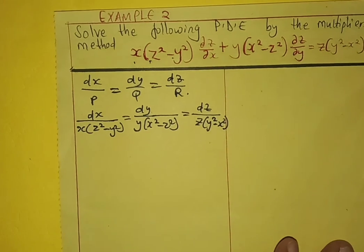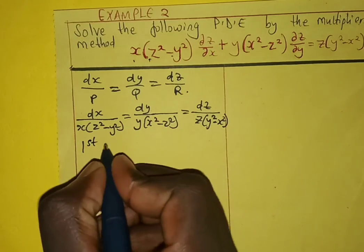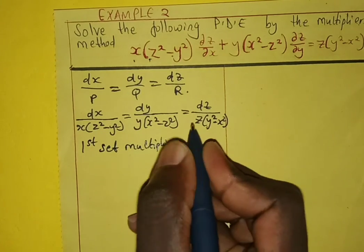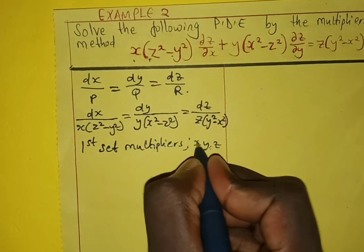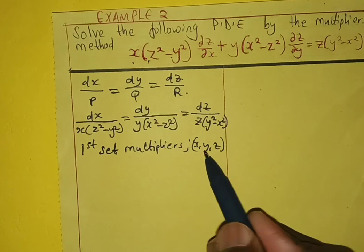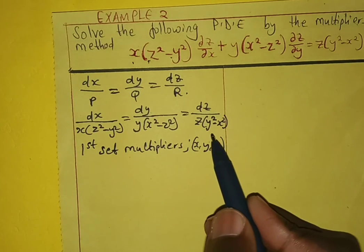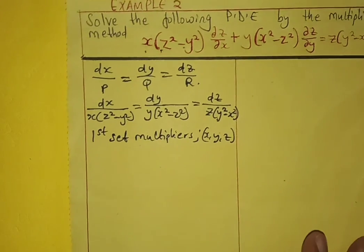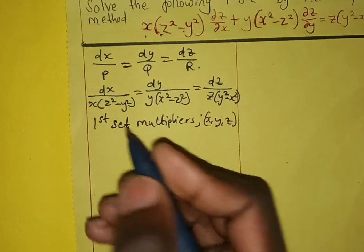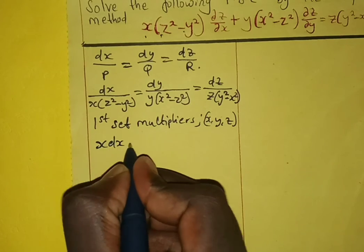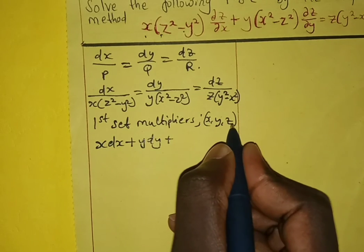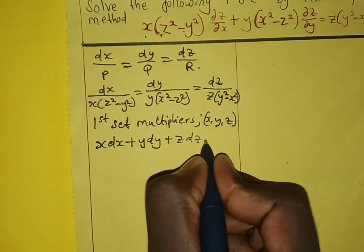Next step, we choose our first set of multipliers. We can choose x, y, z as our first set of multipliers — chosen such that when we multiply them with the denominator and add, the result is zero. Multiplying with the numerator gives us x dx plus y dy plus z dz.